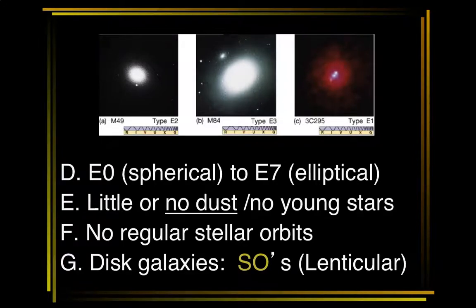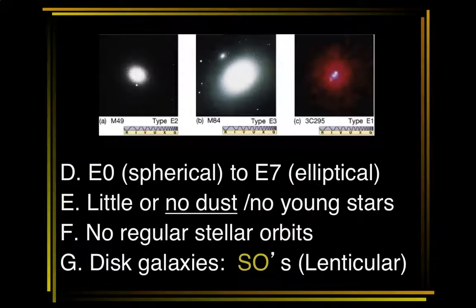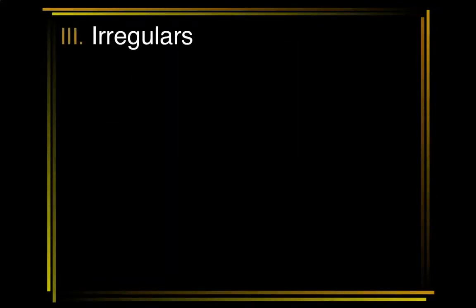That brings us to an interesting type called a pancake galaxy — not quite an elliptical, not quite a spiral. The old term was SO galaxies, but the new term is lenticular. Sometimes these are considered a fourth major type of galaxy. They're very, very squashed ellipticals, or you can think of them as spirals without the arms — kind of an in-between, like a pancake galaxy. Those are lenticulars.